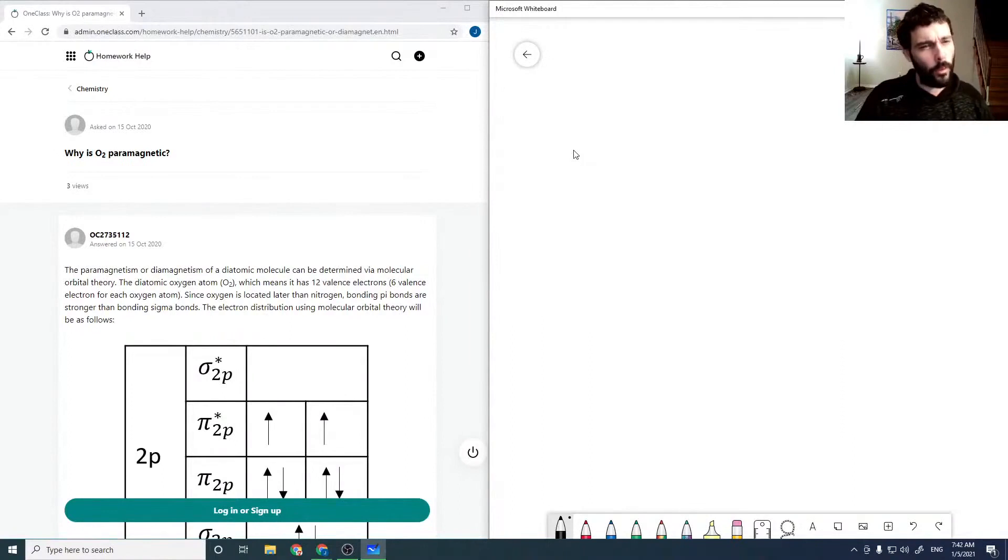Okay, why is O2 paramagnetic? For oxygen, our MO diagram is going to be the overlap between two oxygen atoms.